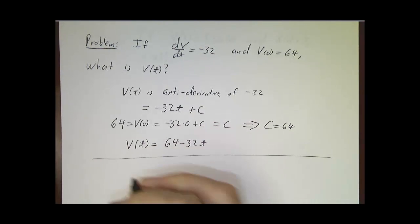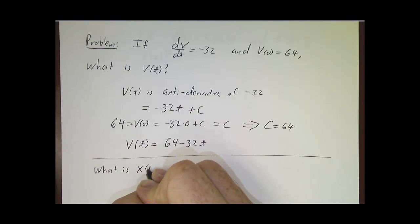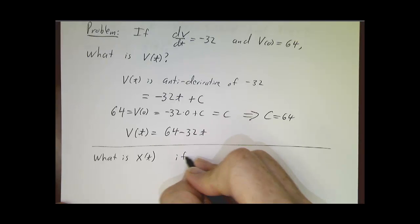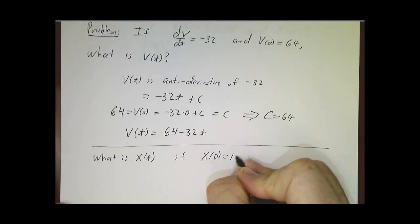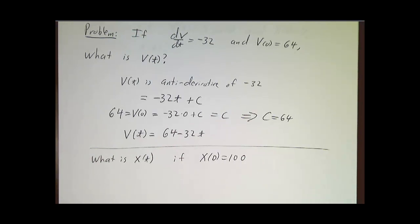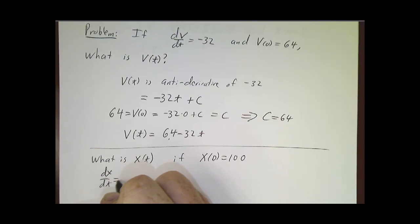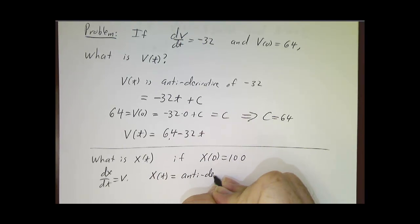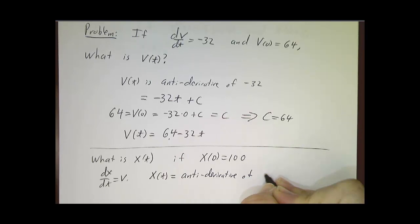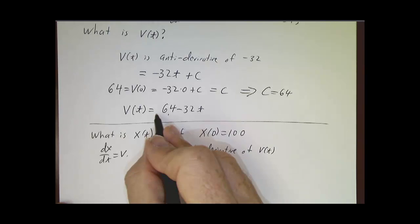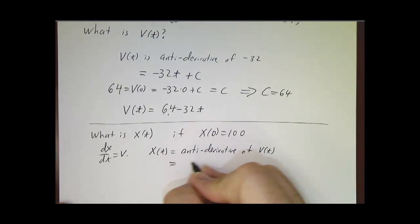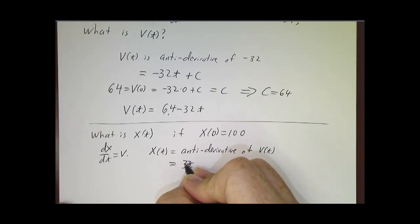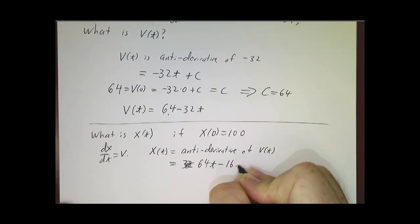Now you might go further and say, what is the position? How high are you off the ground if you started off 100 feet above the ground? You're 100 feet above the ground, you throw something upwards at 64 feet per second, where will it be t seconds later? You've got its velocity, and you know that the derivative of position is velocity, so x must be the antiderivative of velocity. We have to find a function whose derivative is 64 minus 32t. 64t minus 16t squared does the job.